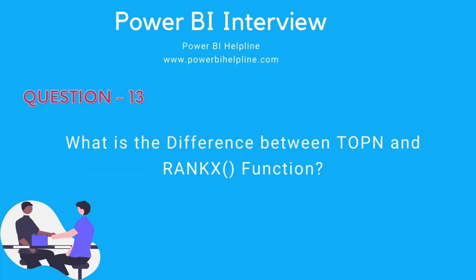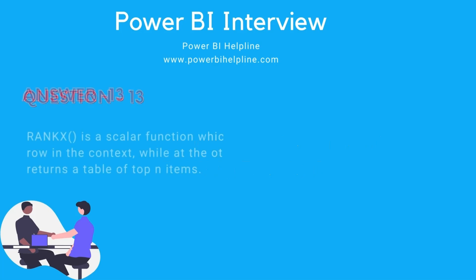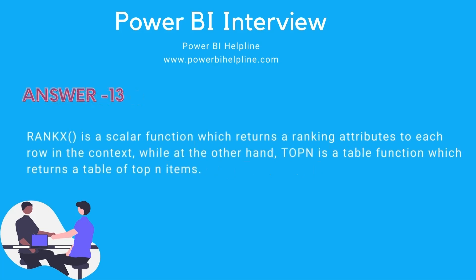What is the difference between the TOPN and RANKX functions? RANKX is a scalar function which returns a ranking attribute to each row in the context, while on the other hand, TOPN is a table function which returns a table of top N items.